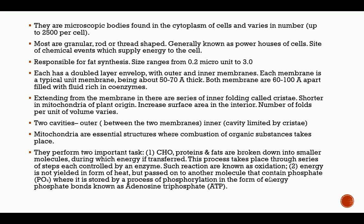The mitochondria has two cavities: the outer between the membranes and the inner cavity limited by the cristae. Mitochondria are essential structures where combustion of organic substances takes place. They perform two important tasks: carbohydrates, proteins, and fats are broken down into smaller molecules, during which energy is transferred through a series of steps each controlled by an enzyme. Such reactions are known as oxidation. Energy is not yielded as heat but passed to a molecule containing phosphate where it is stored by phosphorylation in the form of adenosine triphosphate (ATP).